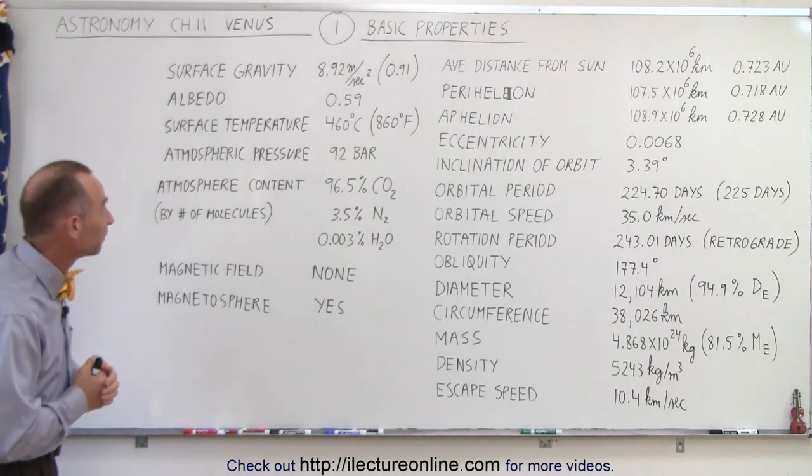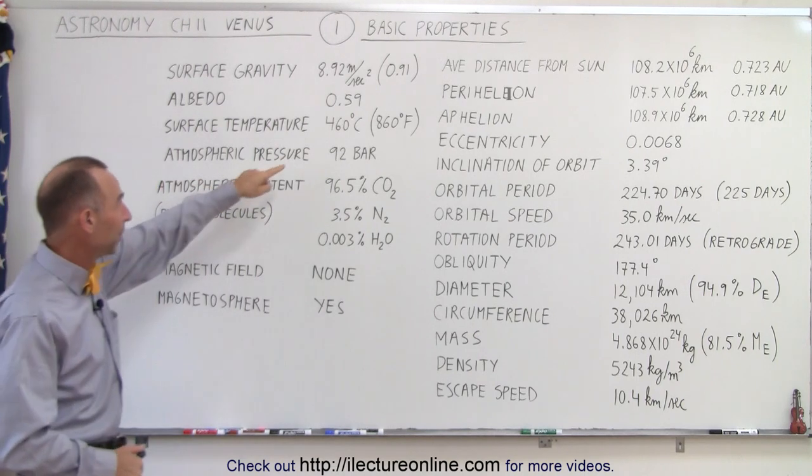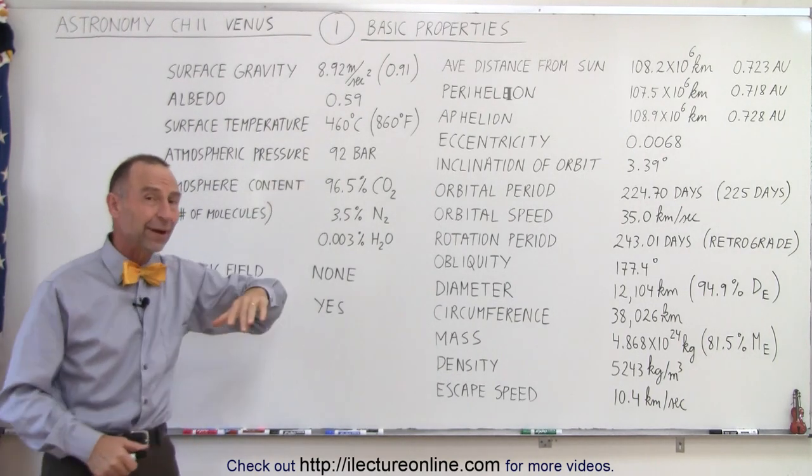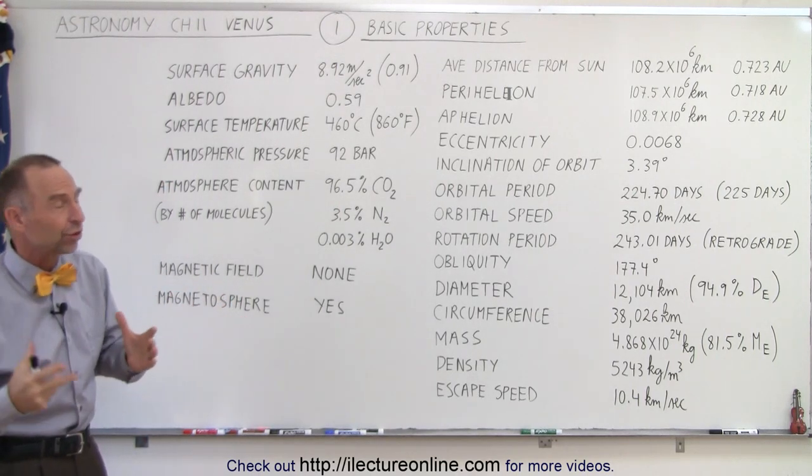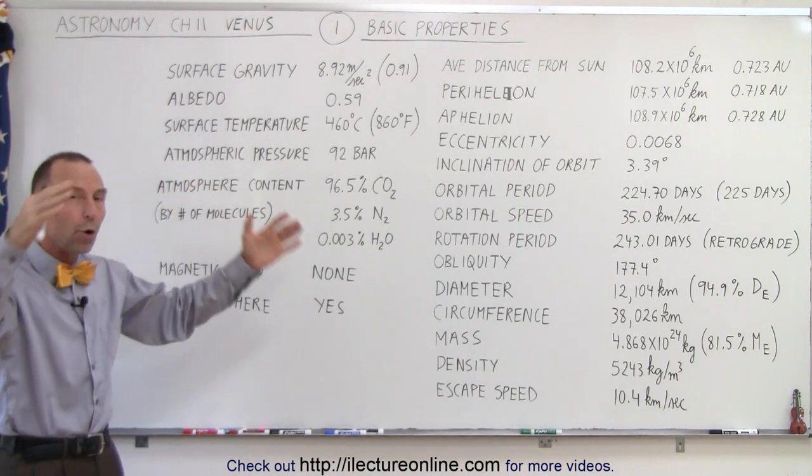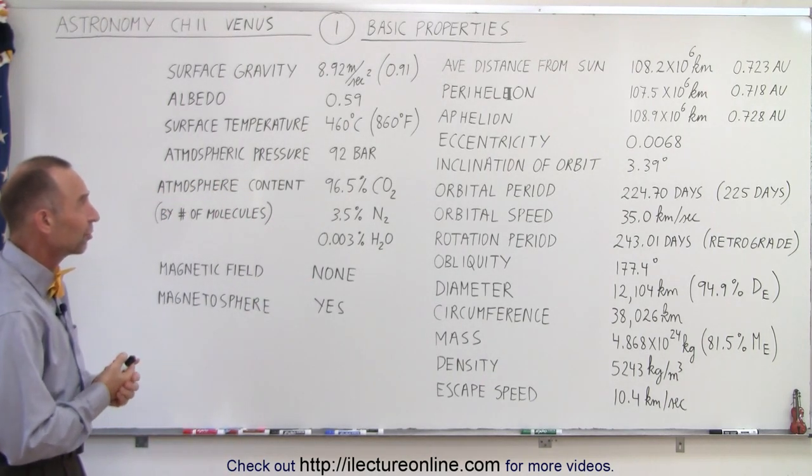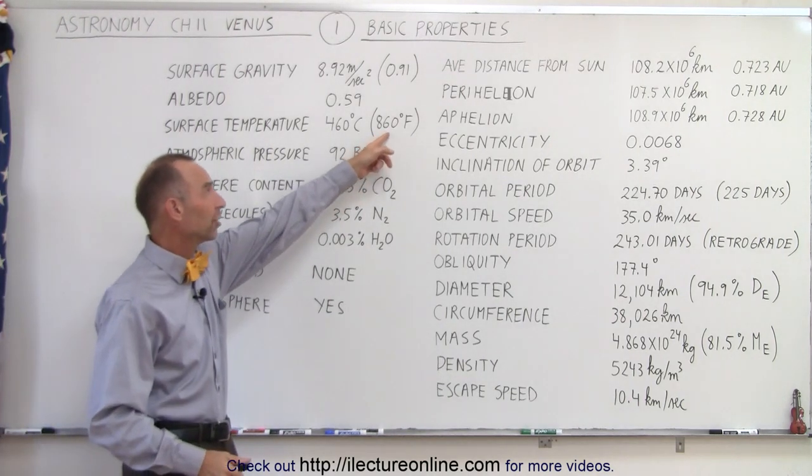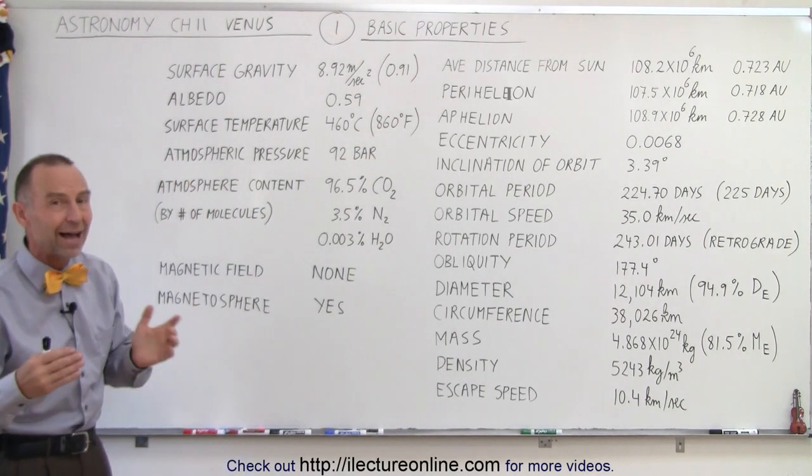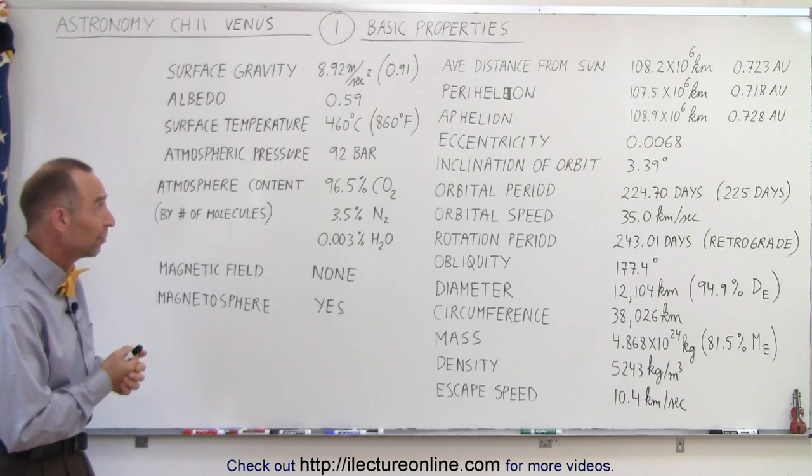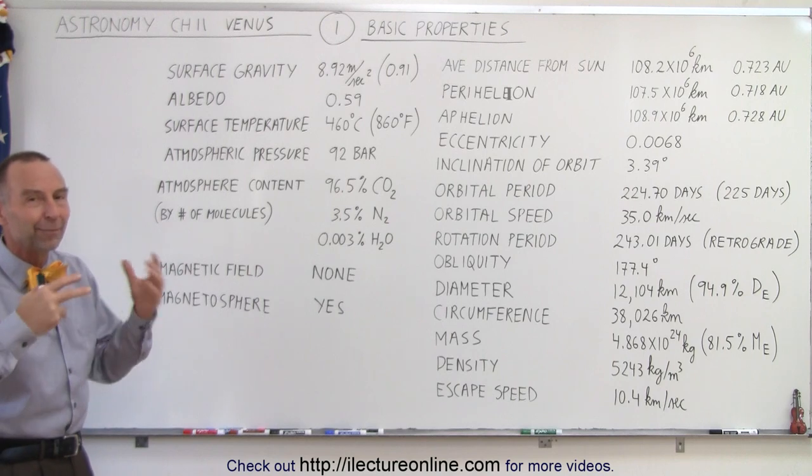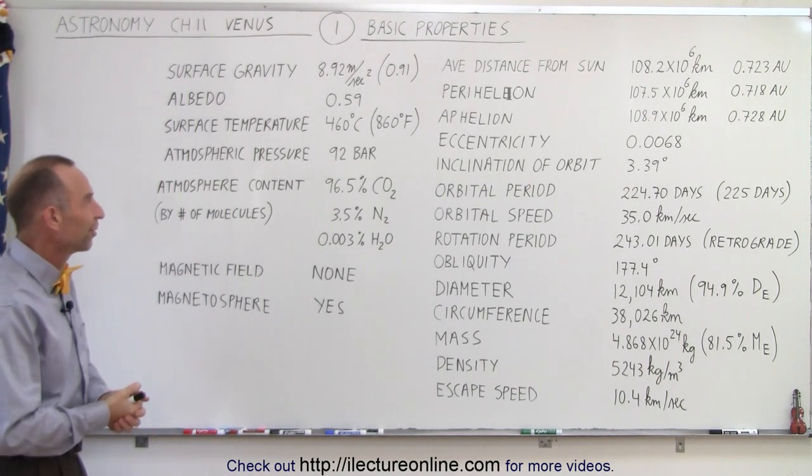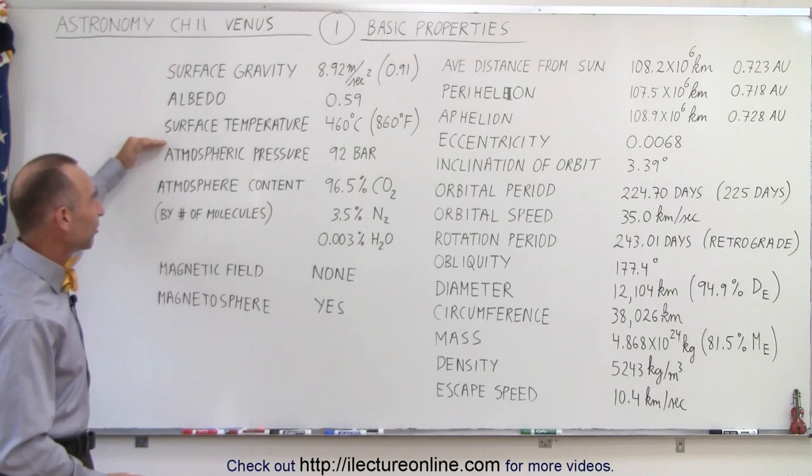Surface temperature: a whopping 460 degrees Celsius, daytime, nighttime, at the polar caps, at the equator—makes virtually no difference. The temperature is virtually the same all over the planet surface at 460 degrees Celsius, which is about 860 degrees Fahrenheit. It's hot enough to melt lead, so circuit boards don't do well. Once the circuit boards heat up, the components will fall off, so it's very difficult to keep any sort of equipment running on the surface of Venus.